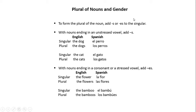Regarding the plural of nouns and gender, to form the plural of a noun, add 's' or 'es' to the singular. With nouns ending in an unstressed vowel, add 's'. For example, the dog (singular) is 'el perro', and the dogs (plural) is 'los perros'. The cat (singular) is 'el gato', and the cats (plural) is 'los gatos'. With nouns ending in a consonant or a stressed vowel, add 'es'.